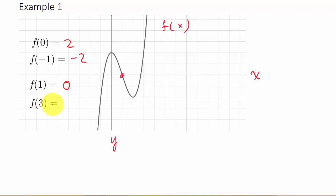Now let's do f of 3. We're going to start where x is 0 and we're going to move to where x is 3: 1, 2, 3. x is 3 right here.